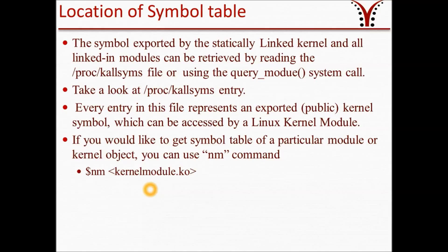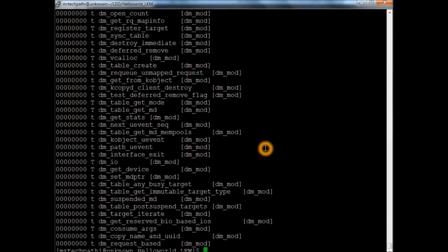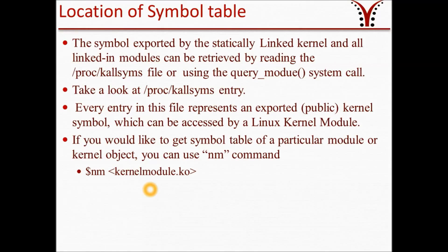Our third topic is location of the symbol table and how to find it. The symbols exported by the statically linked Linux kernel and all linked modules can be retrieved by reading the /proc/kallsyms file or using the query_module system call. Every entry in this file represents an exported kernel symbol table which can be accessed by a Linux kernel module. In order to check the kernel symbol table of the whole Linux system you are using, you can type /proc/kallsyms. This will display a big table containing all the symbol tables present under your current running Linux. If you would like to get the symbol table of a particular module or kernel object, you can use the nm command — for example, nm hello_world.ko.